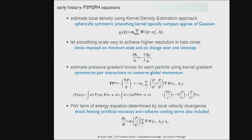We need a pressure gradient term. It helps to write the pressure gradient and integrate by parts, transforming the gradient into an integral of the kernel gradient. The pressure gradient forces symmetrize pair interactions — symmetrizing the pair interactions conserves global momentum, which is important. Then there's an energy equation: the PDV work is handled by taking the divergence dotted with the local velocity field, so I can tell whether the flow is expanding and drop thermal energy, or if converging, raise thermal energy.